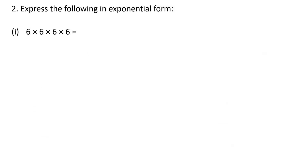Moving on to question number 2: express the following in exponential form. Here the numbers are given as a product and we need to write them in exponential form. 6 is multiplied 4 times, so 6 is the base and 4 is the exponent — giving 6 raised to the power of 4. T multiplied by T: T is the base multiplied 2 times, so T raised to the power of 2.